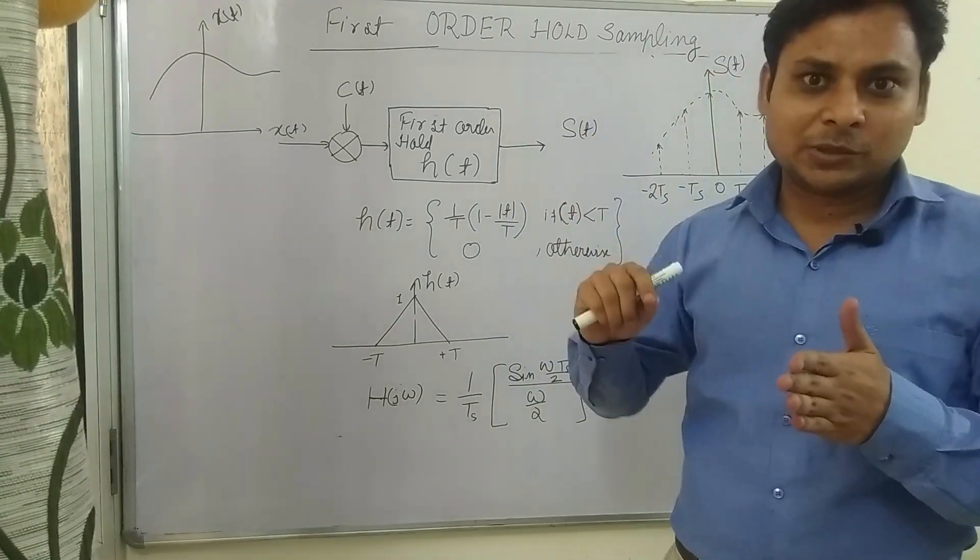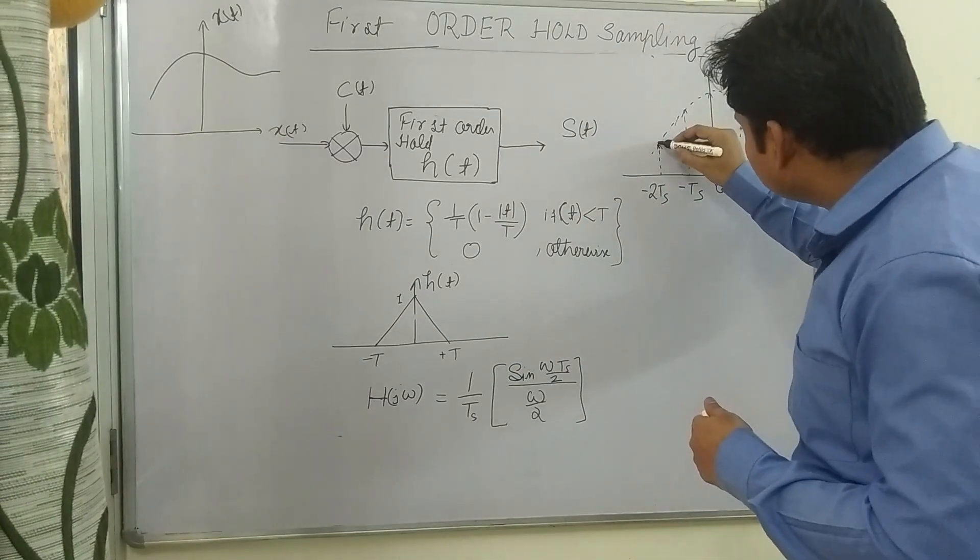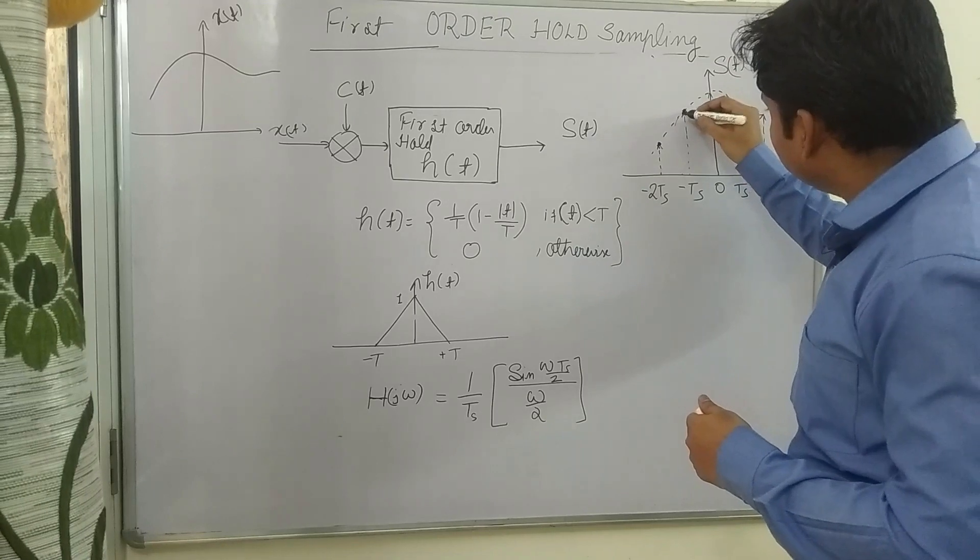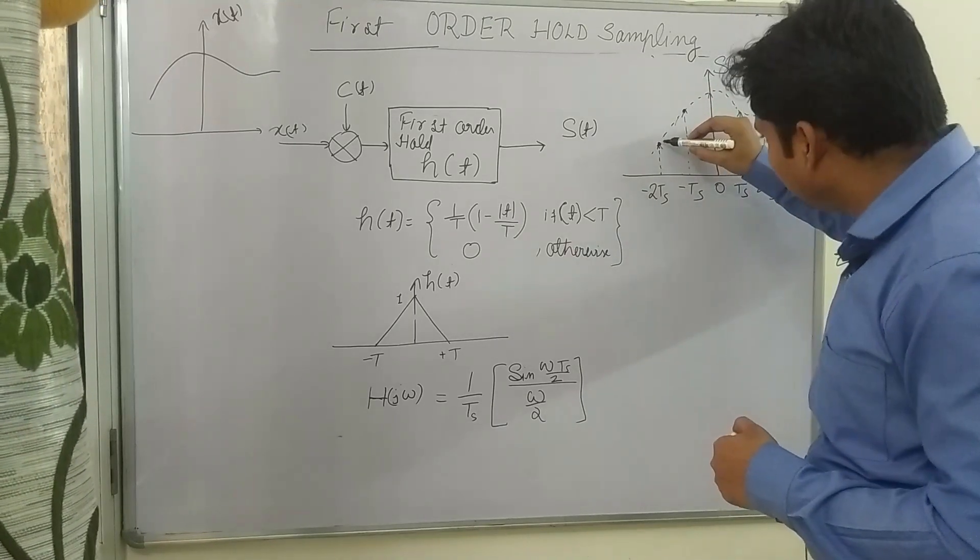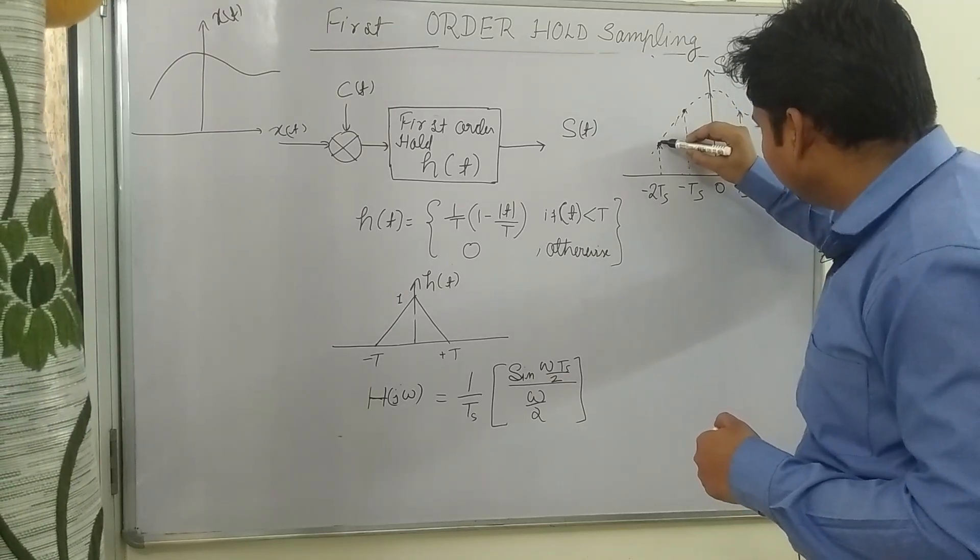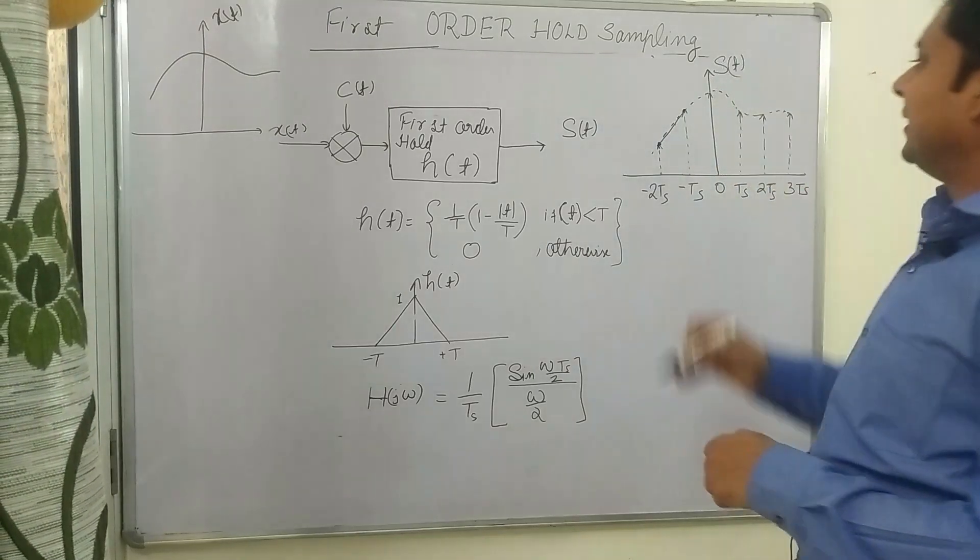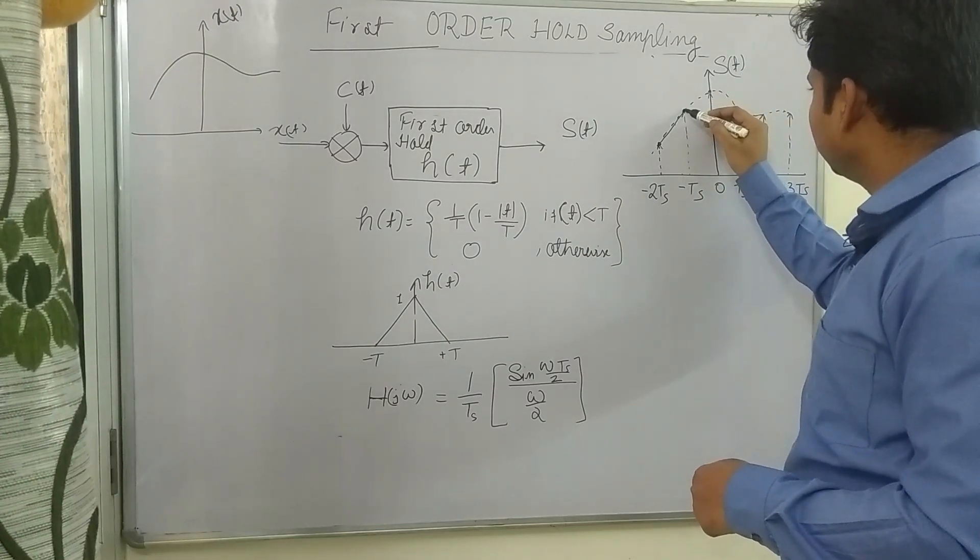will give a linear value, a line. I'm explaining here: from here to here in the zero-order hold, what happened was a constant value, but here it will give a straight line. Now for the next sample you can see